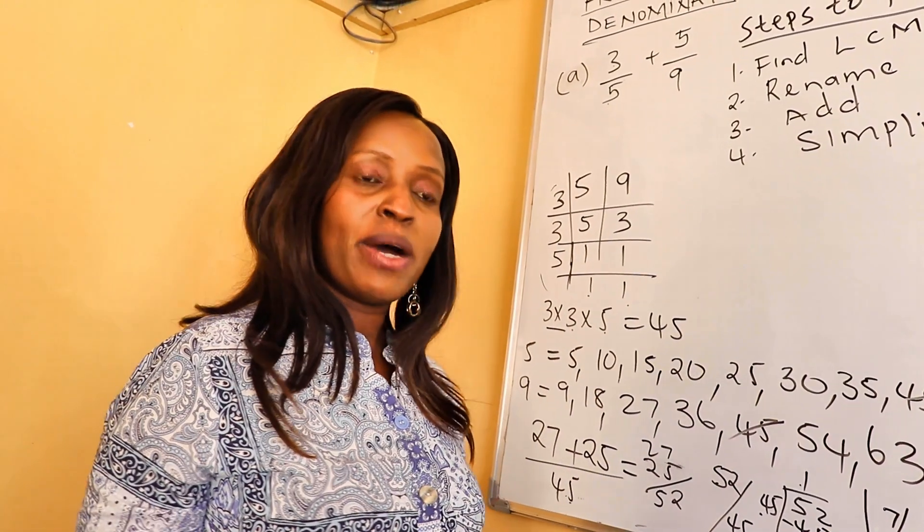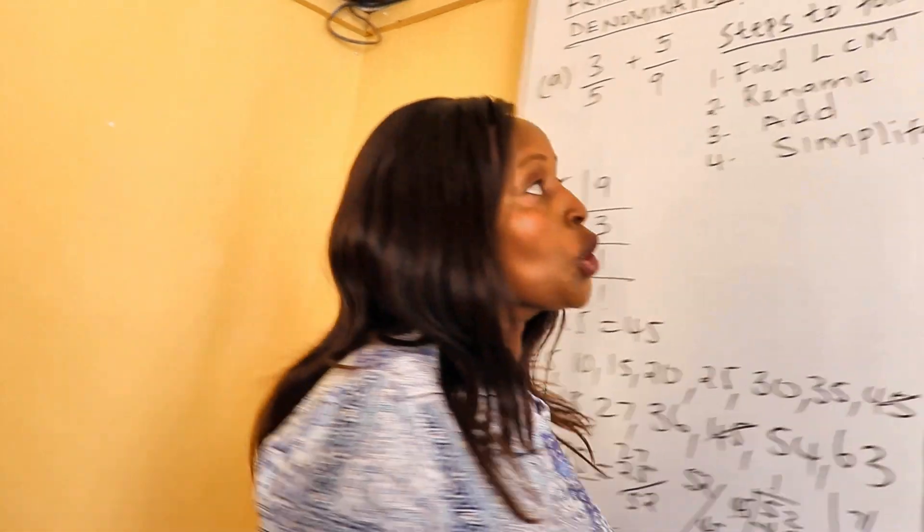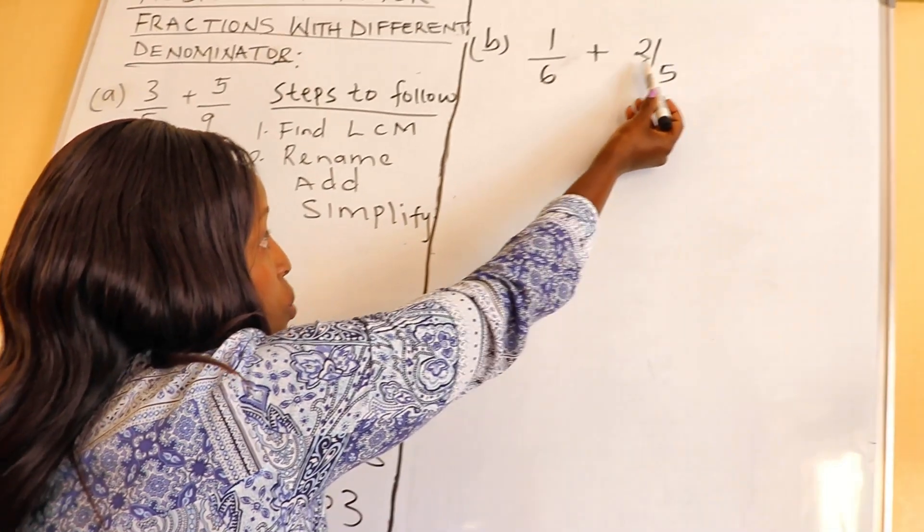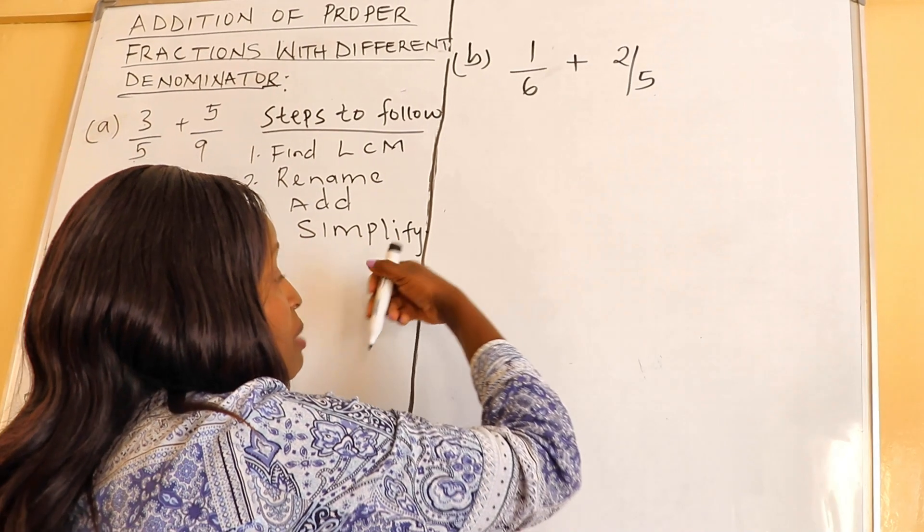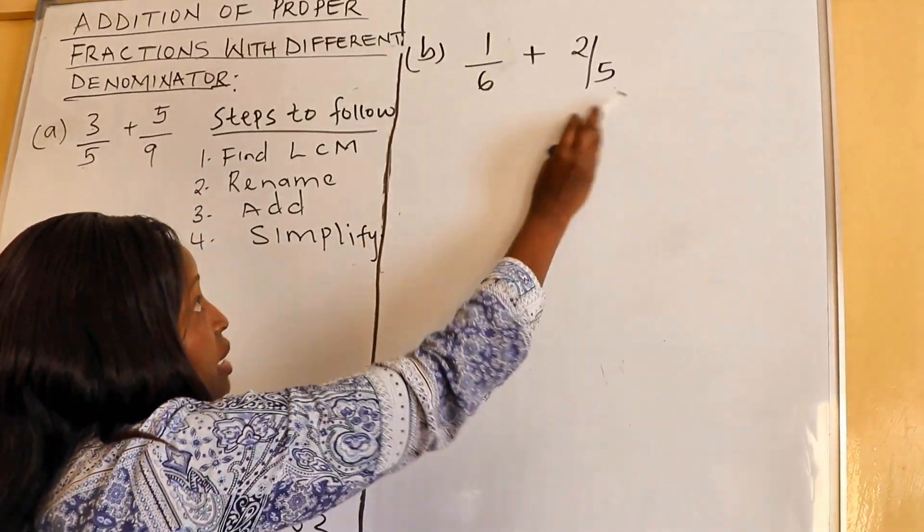Now, let's solve our next example. You are given 1 over 6 plus 2 over 5. Again, we apply the steps. Let's find the LCM of our denominators.